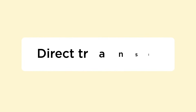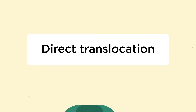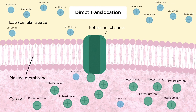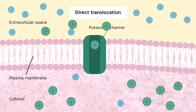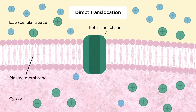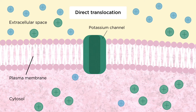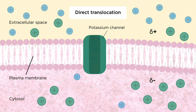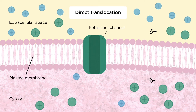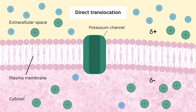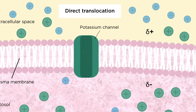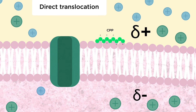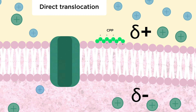Let's start with CPP direct translocation. Cells express potassium channels that move positively charged potassium ions outside of cells. The outside surface of the plasma membrane becomes more positively charged than its inside surface, which sets up a negative electrical potential across the membrane. When CPPs bind to the plasma membrane, they also bring positive charges on the cell surface.